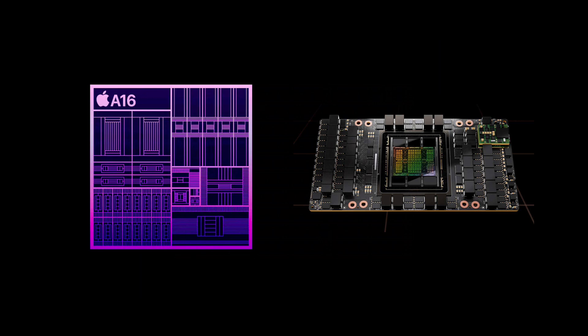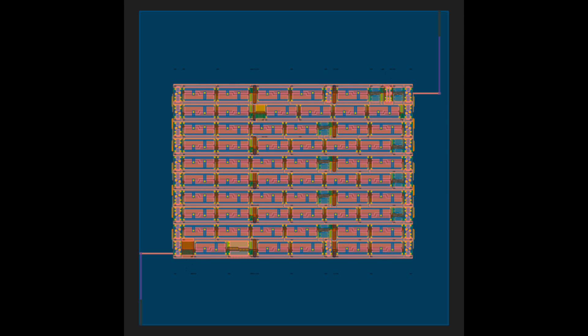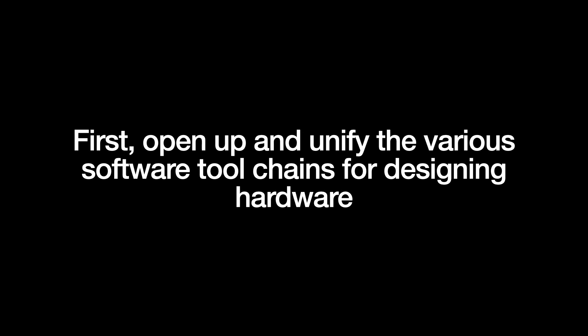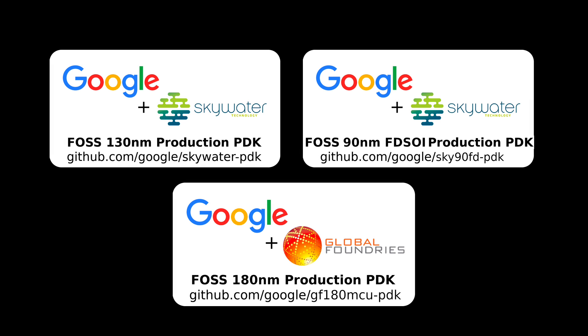Instead, these early stages are more about making it easier for ordinary folks to download and use tools to make and share their own chip designs. Perhaps even fabbing that design. And critically, doing this without having to buy or sign NDAs for Expensive Electronic Design Automation software. So the team's execution steps have been to, first, open up and unify the various softwares and tool chains for designing hardware. This includes the aforementioned open sourcing of the various PDKs from semiconductor foundries.